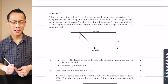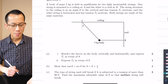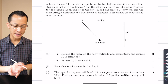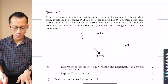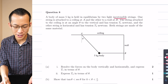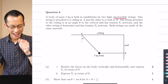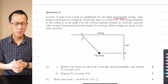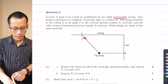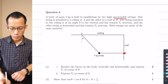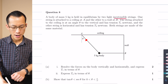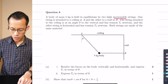Alright, one last example, let's look at this one together. A body of mass 5 kilograms is held in equilibrium by two light, inextensible strings. We saw the word light before. Inextensible means they can't stretch, so as soon as you exceed tension, they're just going to snap. One string is attached to a ceiling at A, and the other to a wall at B. The string attached to the ceiling is at angle theta to the vertical, and has tension T1 newtons.